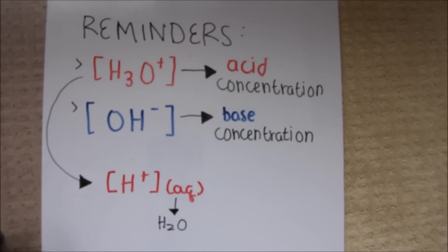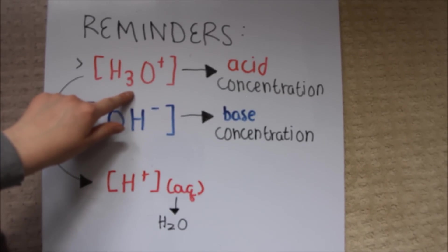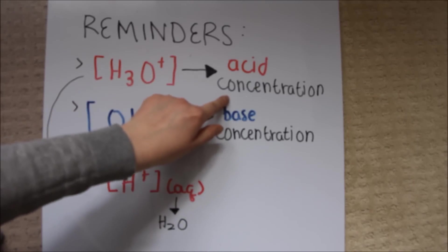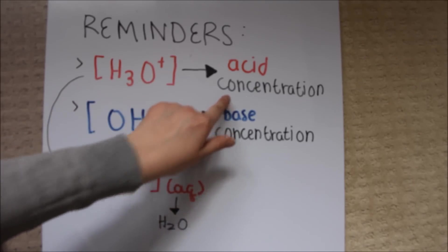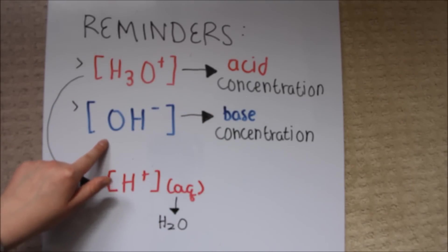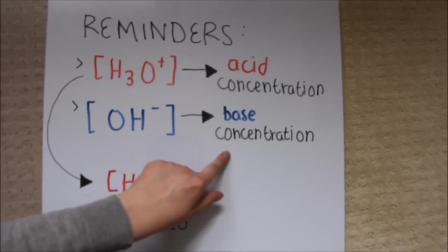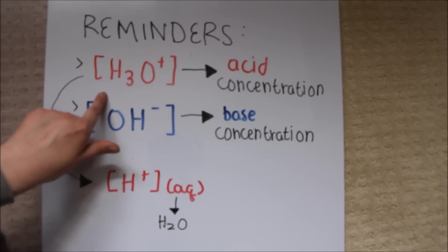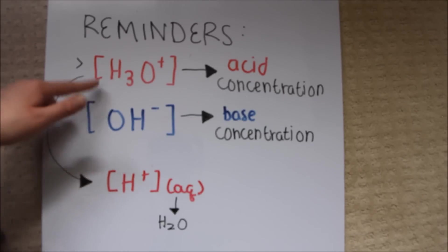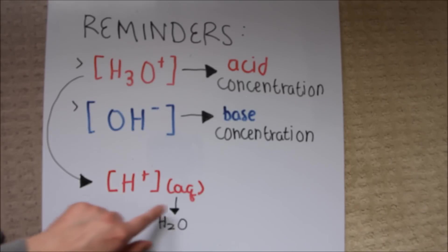Keep in mind that [H3O+] or hydronium represents the acid concentration of a substance, and [OH-] or hydroxide represents the base concentration of a substance. Additionally, H3O+ or hydronium is sometimes represented by H+ aqueous due to previous scientific misconceptions. However, this is still considered correct because the AQ insinuates the presence of water.